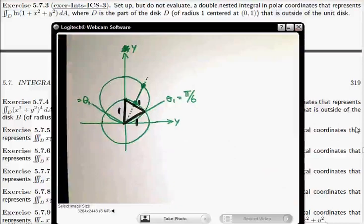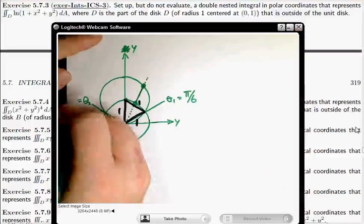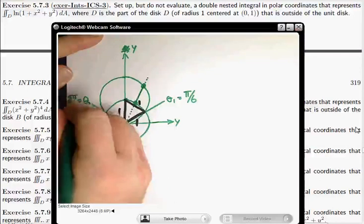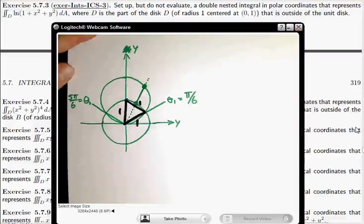Is that good? Okay, cool. Similar argument. This is 5π/6 over here.